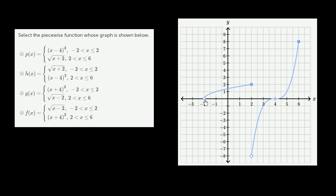This first piece looks like a radical function shifted. Square root of x would look like this, and this just looks like square root of x shifted 2 to the left — so this looks like square root of x plus 2. You could verify that: when x is negative 2, negative 2 plus 2 gives square root of 0, which is 0, and it's not defined there. When x is negative 1, negative 1 plus 2 is 1, and the principal root of 1 is 1. When x equals 2, 2 plus 2 is 4, and the principal root of 4 is positive 2. So this looks like a pretty good candidate.